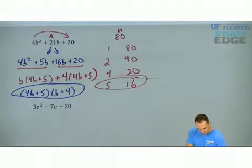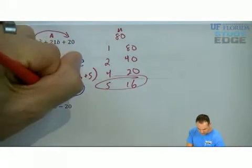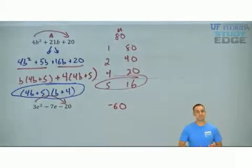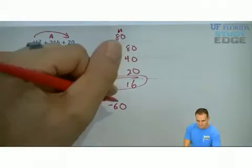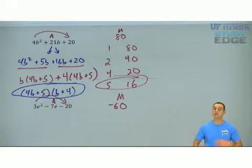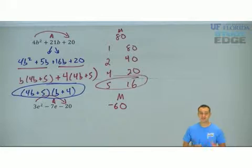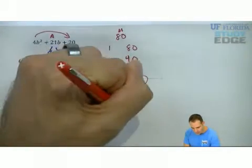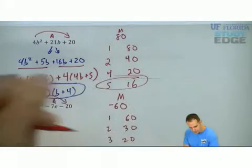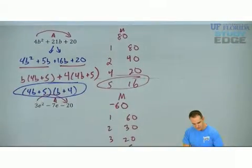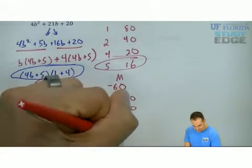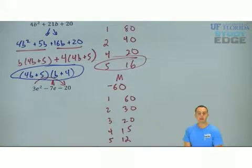Step 1. 3 times negative 20, but really I'm looking at 3 times 20, so it's going to be negative 60. Now, what multiplies to negative 60 and adds to negative 7? So the first thing I'm going to do here is figure out the factors of 60. 1 times 60, 2 times 30, 3 times 20, 4 times 15. Anything yet? Nope.